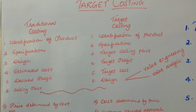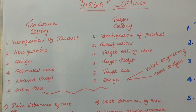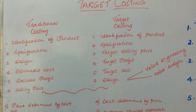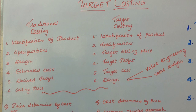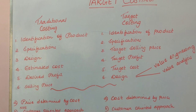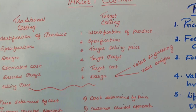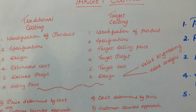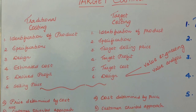The next difference is: traditional costing is not a customer-based approach — you are not thinking of the customer when you are costing. Whereas in target costing, you think of the customer specification and then try to manufacture accordingly. The third difference is: traditional costing is suitable for established products, not for newly produced products, whereas target costing is used only for newly introduced products and is not suited for established products.